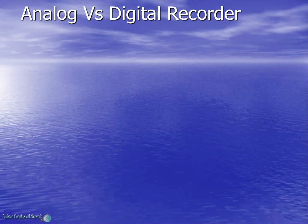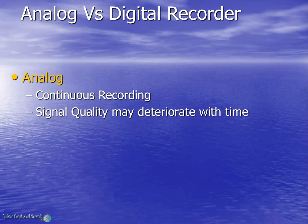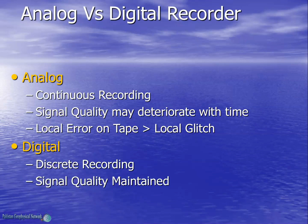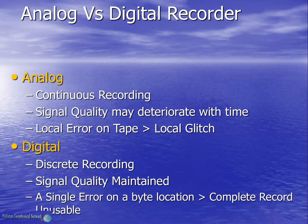Comparing analog with digital recording: analog is continuous recording, where signal quality may deteriorate with time, and any local error on the tape will create a local glitch, but the rest of the data would be readable. On the other hand, digital involves discrete recording. The signal quality is always maintained, but if there is a single error on a byte location, the complete record would be unusable.